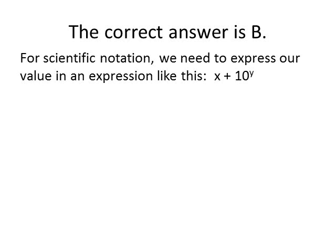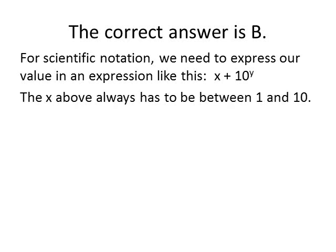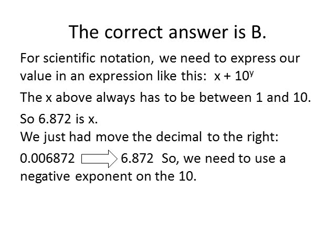For scientific notation, you need to take your original value and express that value in an equation that looks like this: x times 10 to the power of y. So the value of x, in other words, the number before the times sign in scientific notation, always has to be a value between 1 and 10. So the value for x here will be 6.872. In order for us to arrive at the value 6.872, we had to move the decimal to the right.